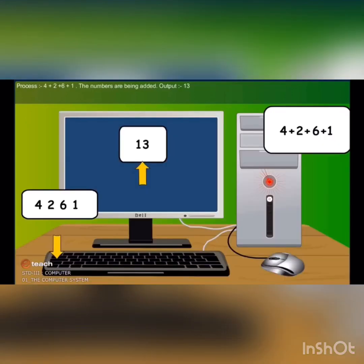Now the example 4261. We enter through the keyboard. The numbers are being added through the processing device and output you can see on the monitor. This is the example of input, processing and output devices.